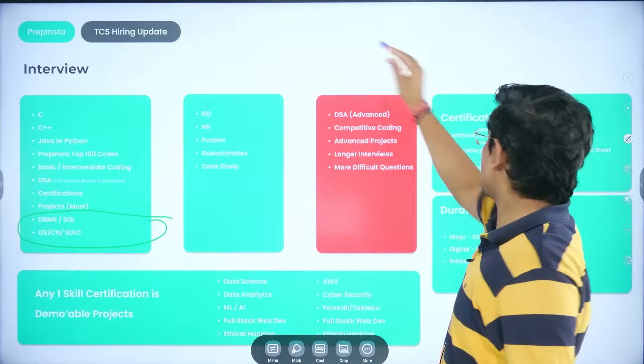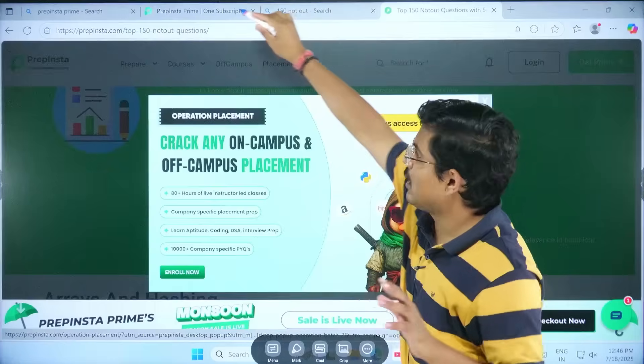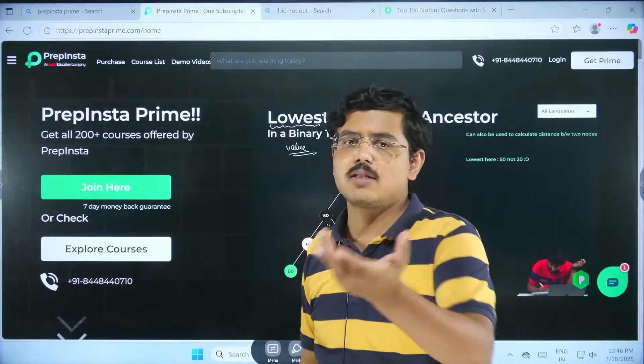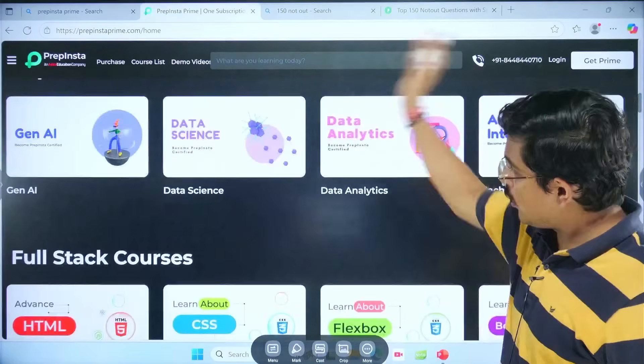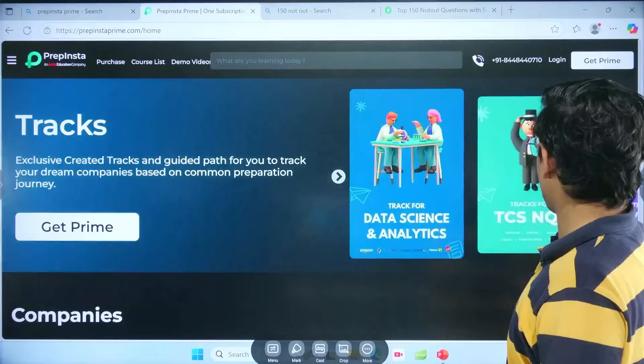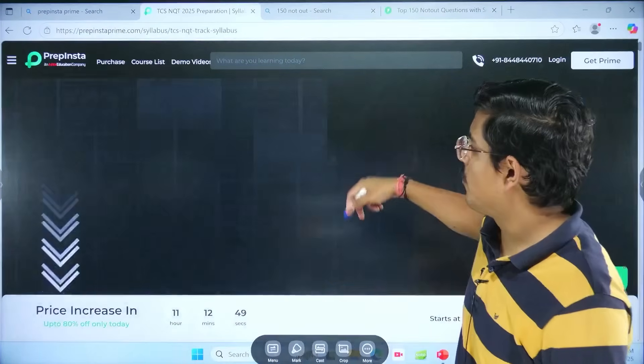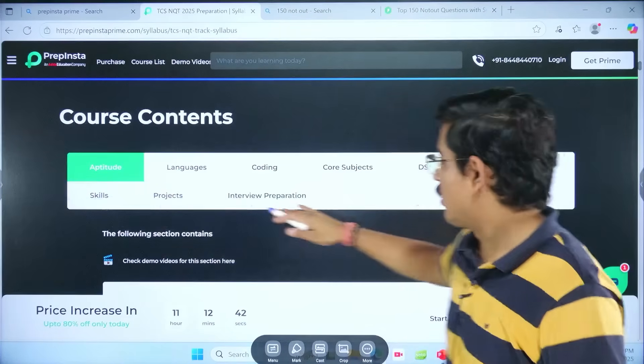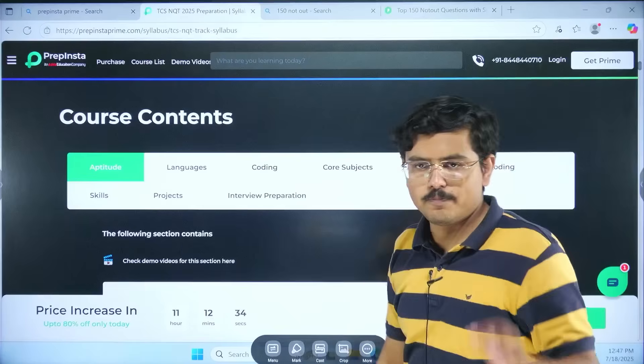This is also fully available on prepinstaprime.com. It is completely available in a structured manner. It's not that it's not ready for free. You can also prepare for free. But, the point is, you'll have to do a lot of extra effort that has already been done on prepinstaprime.com. So, why to invent a wheel? When you can actually access all the 200 plus courses in single subscription. If I show you here, there is a track for big four companies, tracks for TCS NQT. So, you simply click on this tracks for TCS NQT and you would have a complete track to prepare from very basic aptitude to interview preparation. Everything. DSA, competitive coding, skills, projects, core subjects, languages, everything at one place.